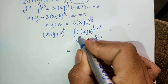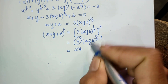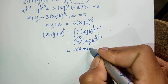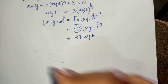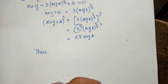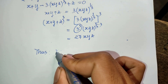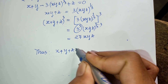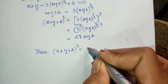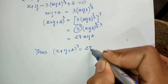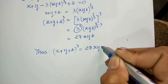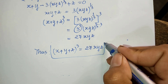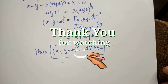Since 3^3 equals 27, we get x plus y plus z, all to the power 3, equals 27xyz. That is our solution. Thank you for watching. If you like my videos, please don't forget to subscribe to my channel for more exciting videos. Goodbye!